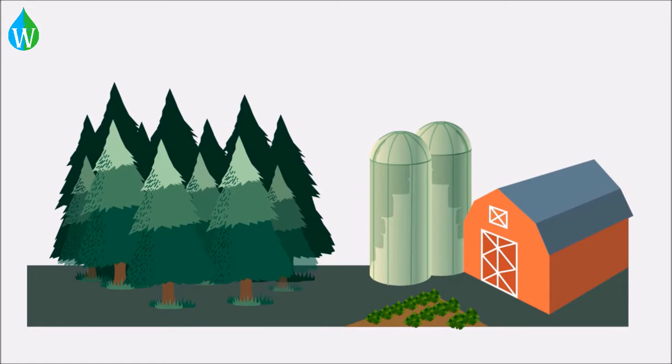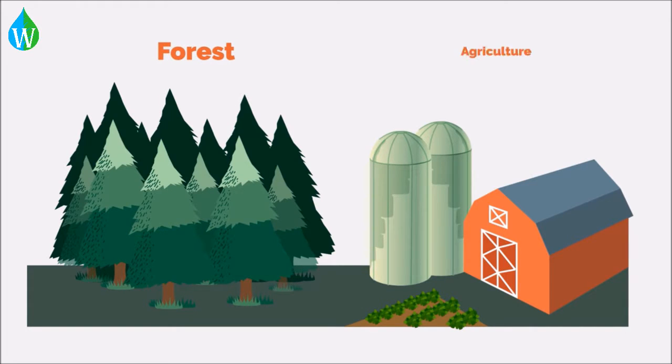Ecosystem management takes a variety of different forms depending upon the desired goal for the habitat. Two very common types of ecosystem management are forestry and agriculture.